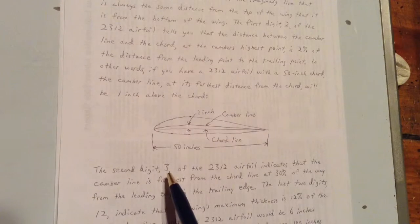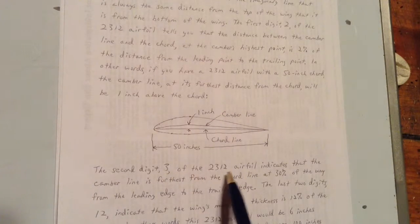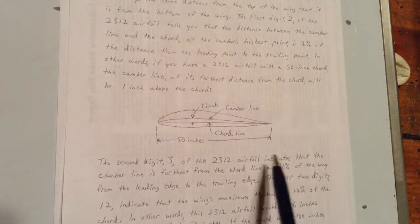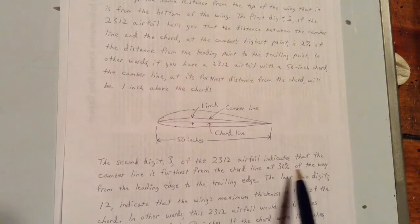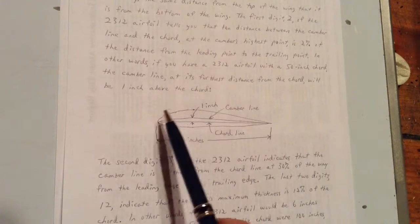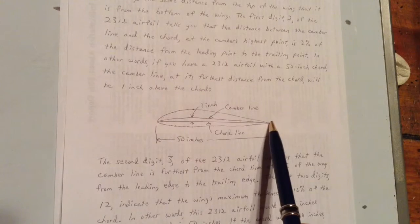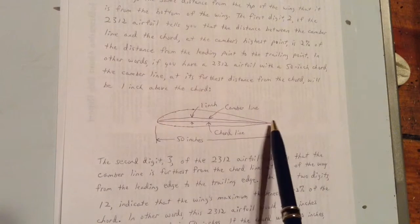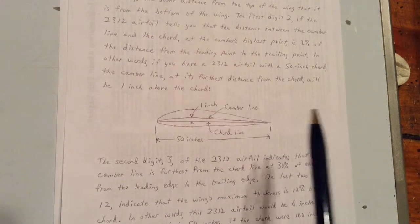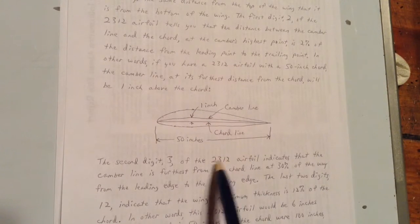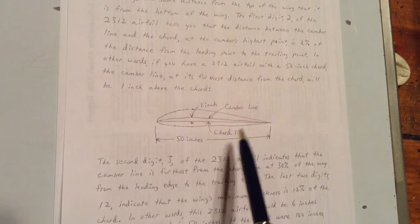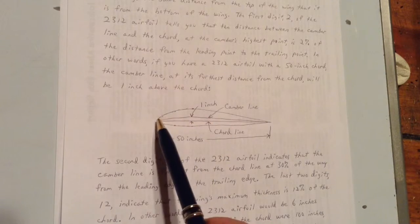The second digit, 3, of the 2-3-1-2 airfoil, indicates that the camber line is furthest from the cord line at 30% of the way from the leading edge there to the trailing edge. So if there's 0%, there's 100% of the way from the trailing edge. Well, there would be 50% and about there would be 30%. So this 2-3-1-2 has its camber line furthest away from the cord at 30% of the way back from here to there.